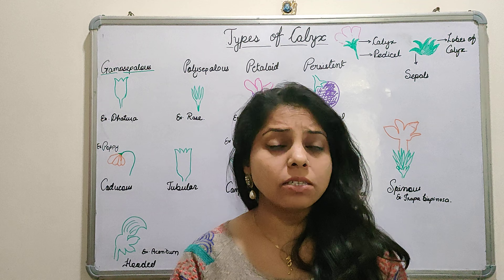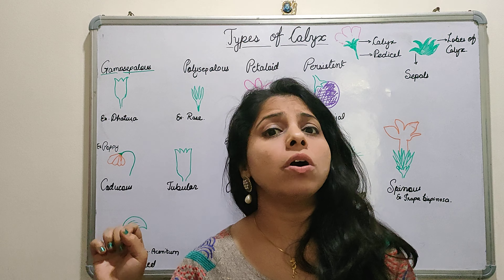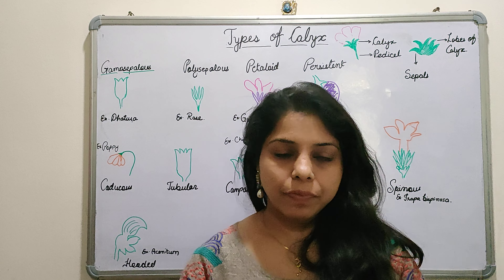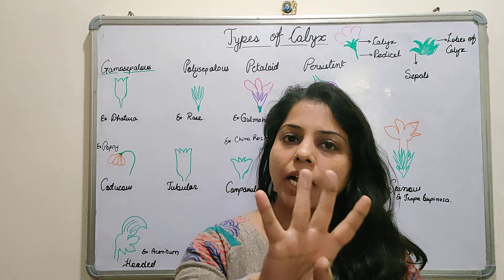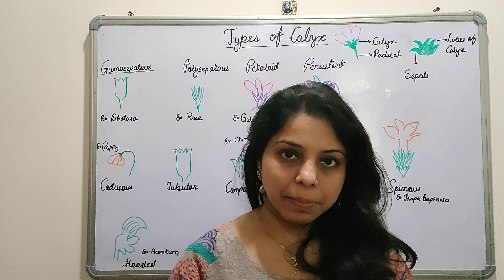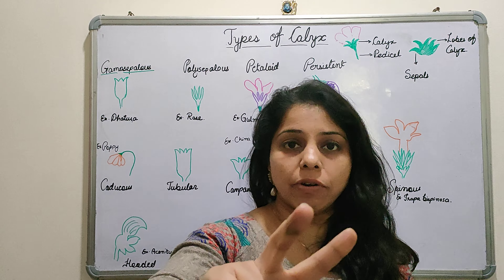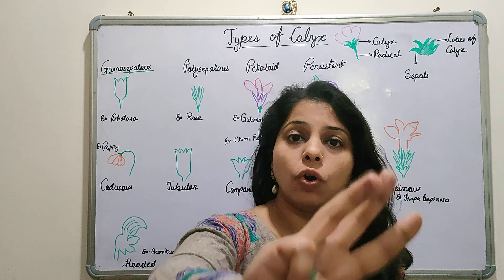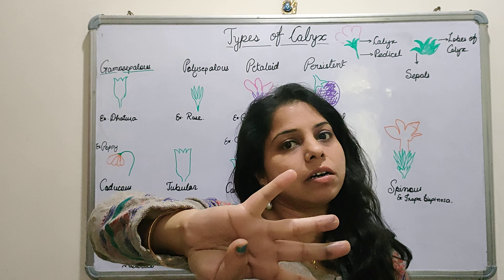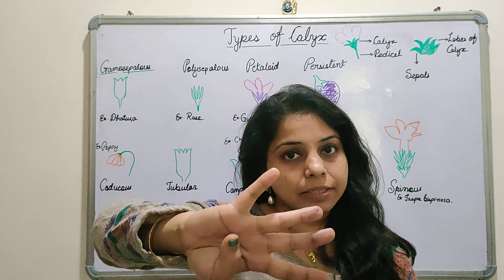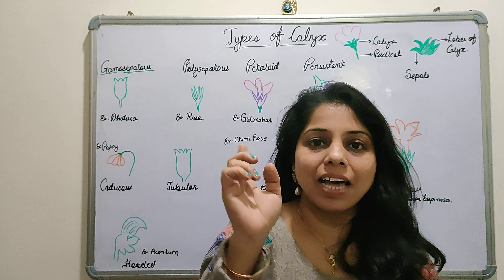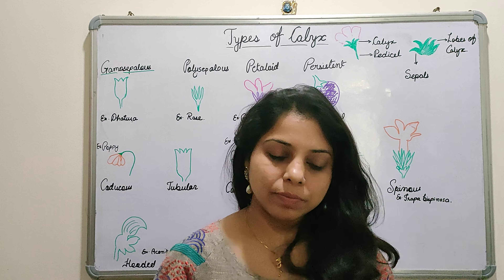Now what is calyx? Calyx is a whorl of the flower. A flower has four whorls: Gynoecium, Androecium, Corolla, and Calyx. Calyx is the outermost one.